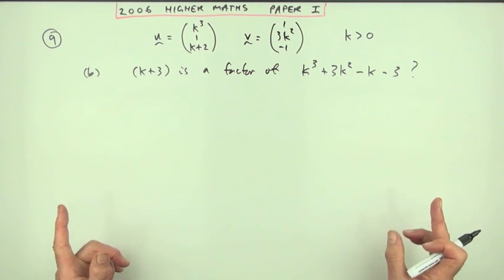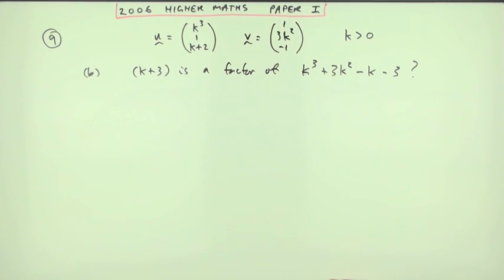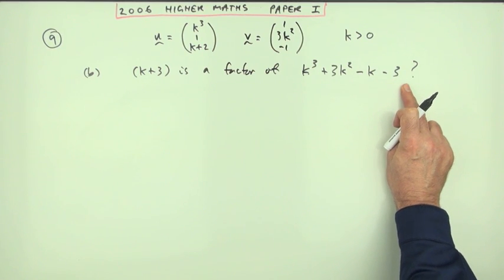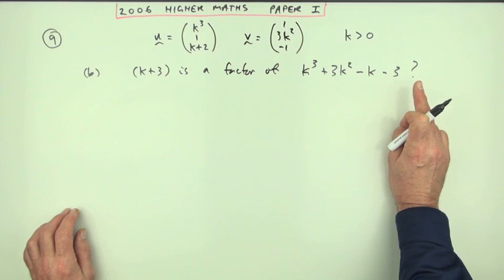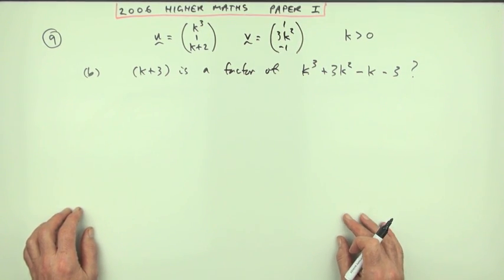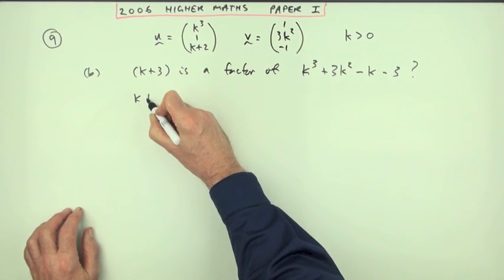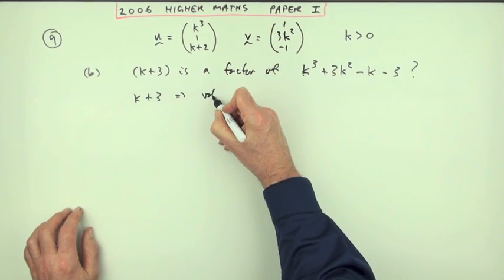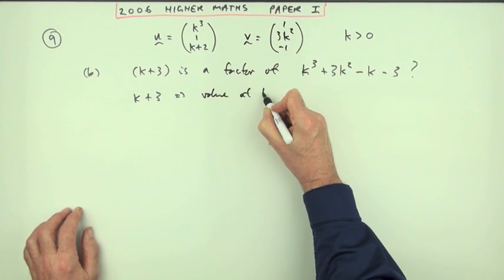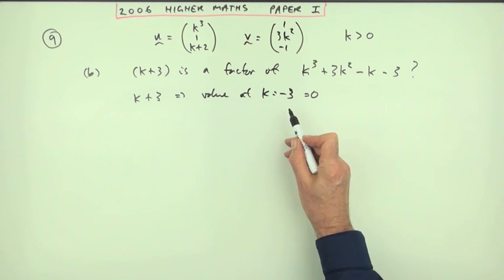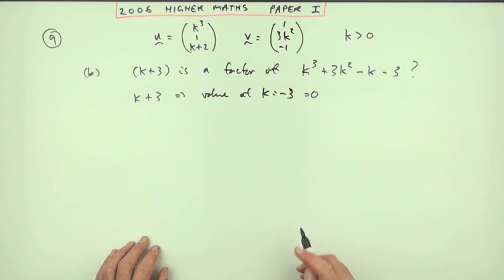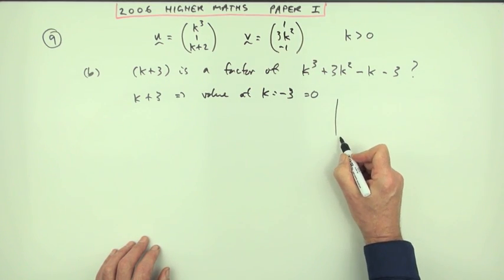I'll start with the method you'd probably use — synthetic division. Notice this isn't an equation here, so strictly speaking I can't use the term 'root', since a root is a solution of an equation equal to zero. So I'd say: k+3 is a factor means that the value at k = -3 equals zero. That's what I'm going to test — but I'll test it using synthetic division.